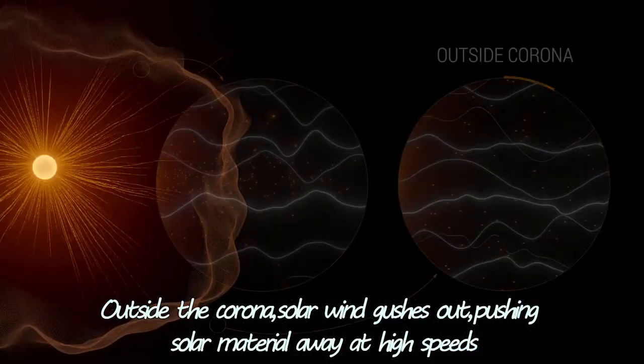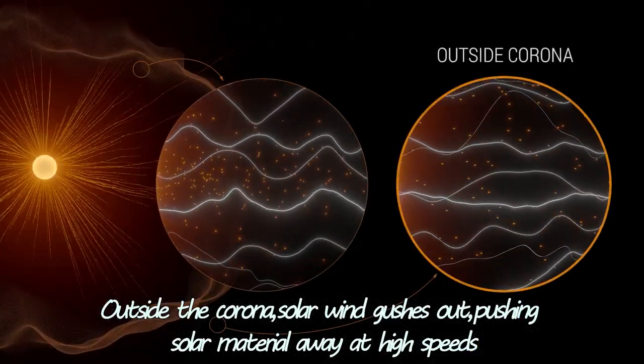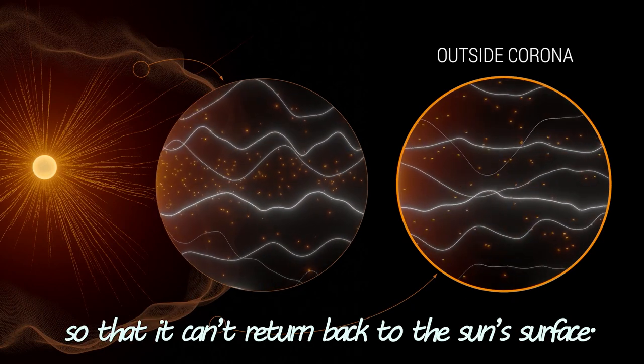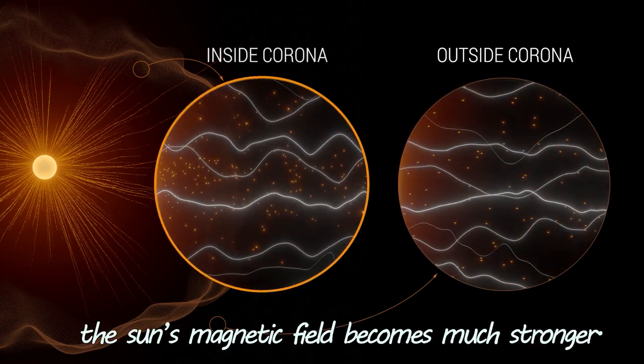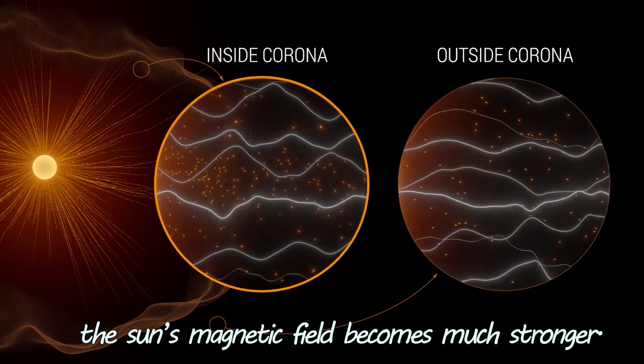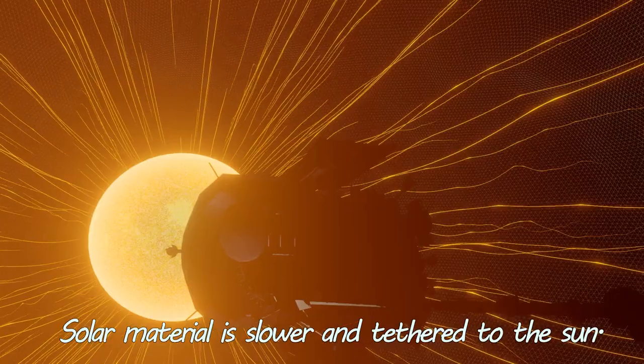Outside the corona, solar wind gushes out, pushing solar material away at high speeds so that it cannot return back to the Sun's surface. Inside the corona, the Sun's magnetic field becomes much stronger. Solar material is slower and tethered to the Sun.